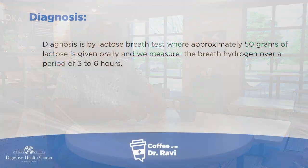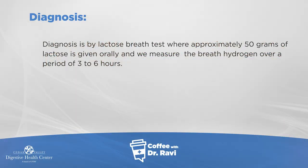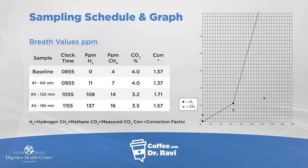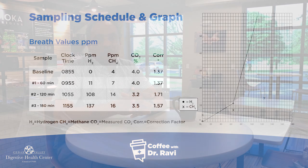The diagnosis can be made by either avoiding milk and seeing if the symptoms improve, or we can do a breath test. The breath test is simply done by having you swallow about 50 grams of lactose in our office, and then you blow into a bag and we measure if you're able to break down that milk. As you can see on this graph, if you don't have the ability to digest milk, the hydrogen in the breath — shown as the solid line — goes up.